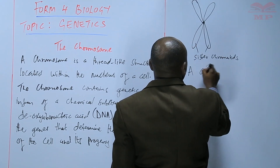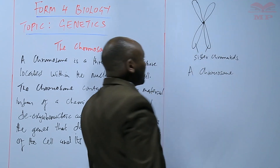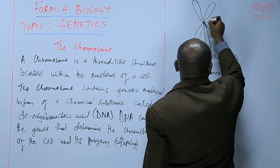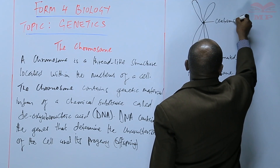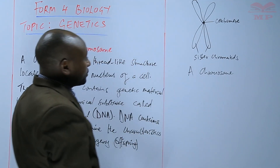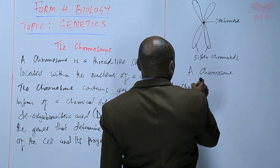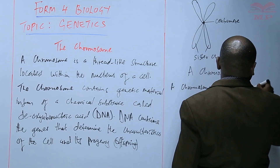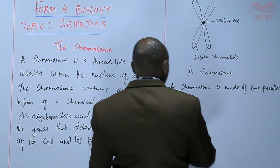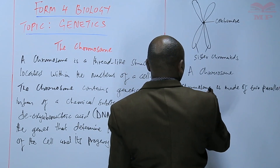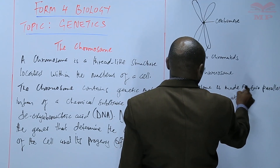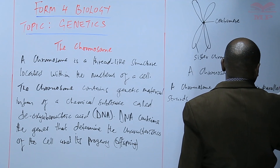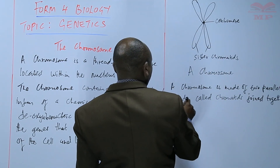They are called sister chromatids because they make a chromosome. So a chromosome is made of two parallel strands called chromatids, joined together at the centromere.